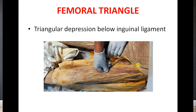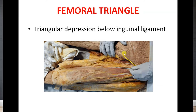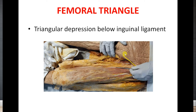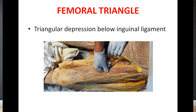It is called an inverted triangle because its base is related to the inguinal ligament. It is a triangular depression below the inguinal ligament. The inguinal ligament is attached from the anterior superior iliac spine laterally to the pubic tubercle medially, and that forms the base of the femoral triangle. So the inguinal ligament forms the base of the femoral triangle.